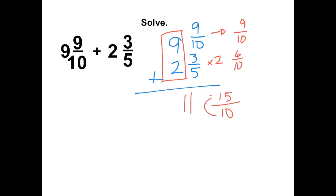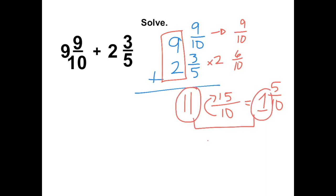15 over 10 can be rewritten as 1 and 5 over 10. Now that we have two whole numbers, 11 and 1, we can combine them to make 12 and 5 over 10. Lastly, 5 over 10 can be simplified, giving us a final answer of 12 and 1 half.